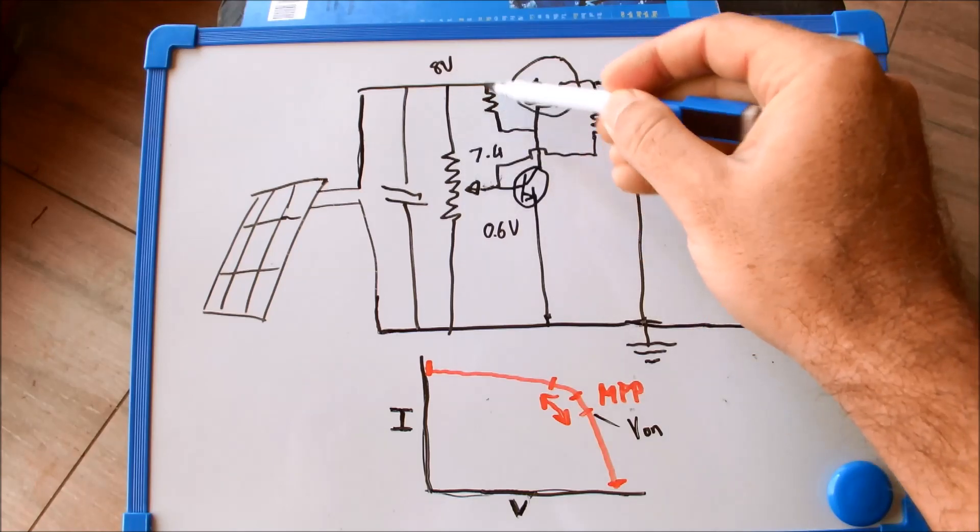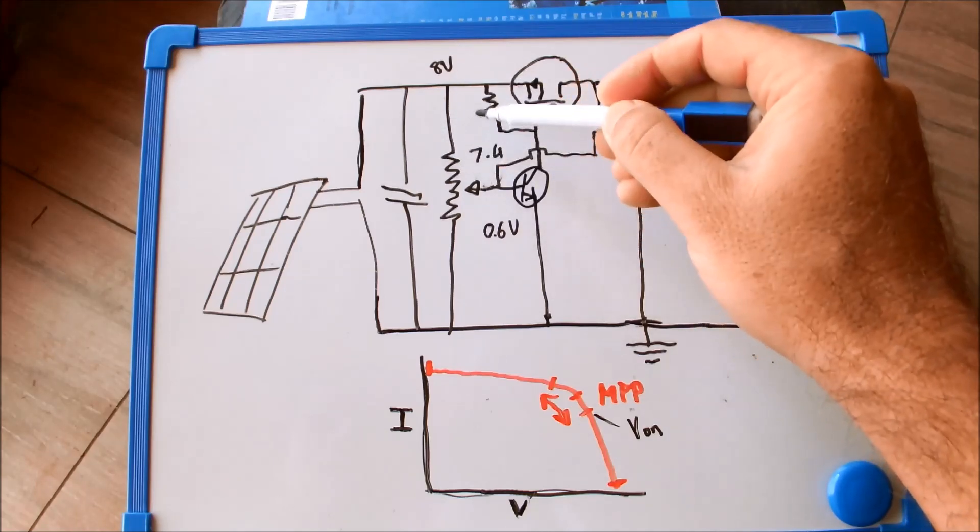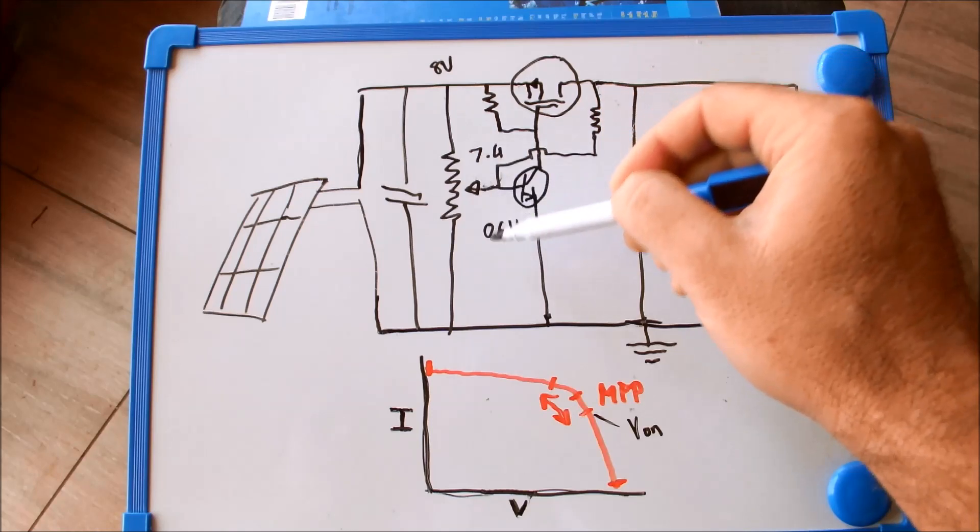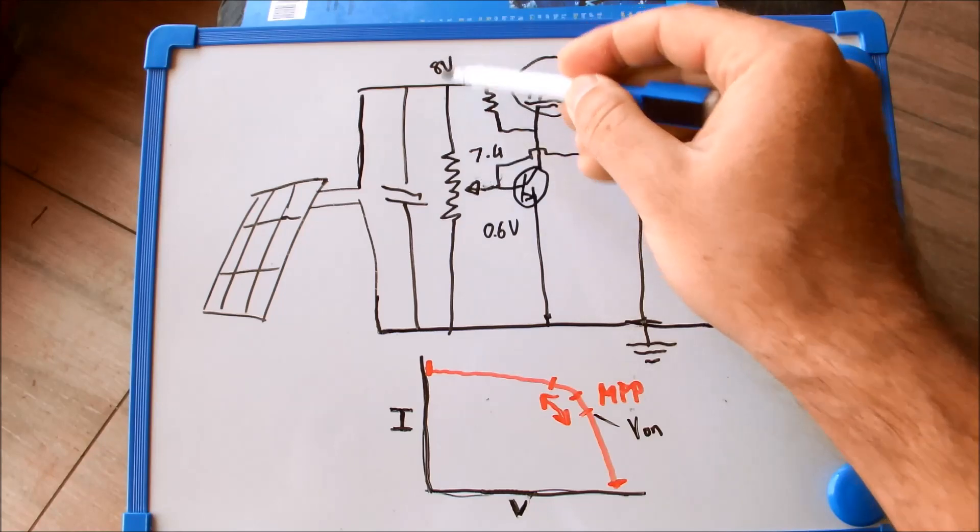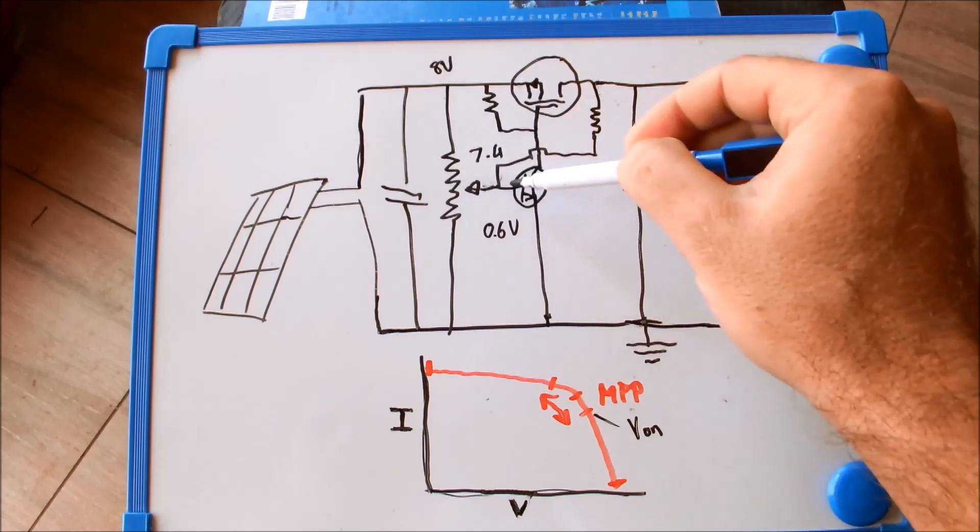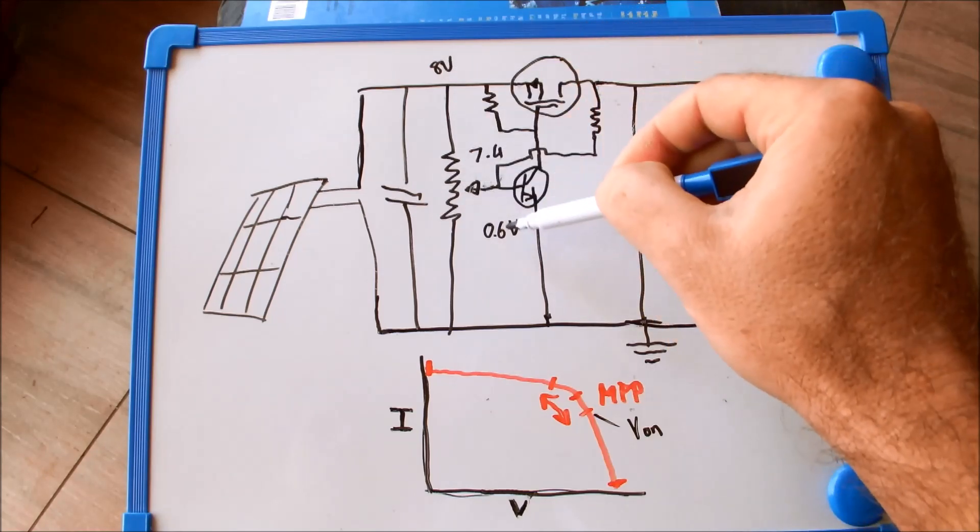Which then lowers the effective resistance and changes the ratio between the lower part and the upper part of this voltage divider. So effectively you change the voltage at which this point drops below 0.6 volts.